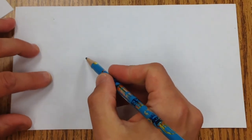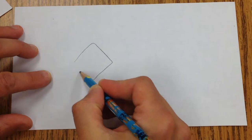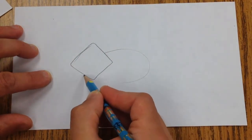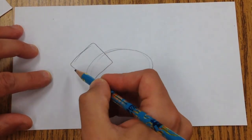So we're going to start by making kind of a rounded diamond shape here for the head, and I'm going to very lightly draw this oval here to intersect. That's going to be the body and the head.